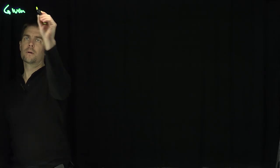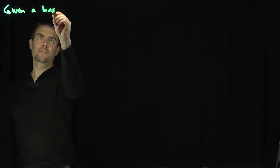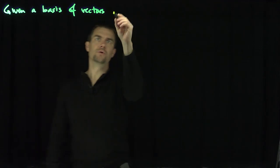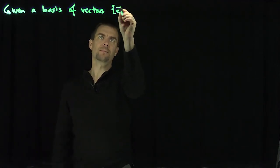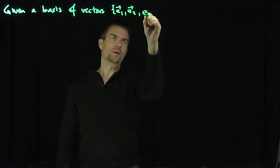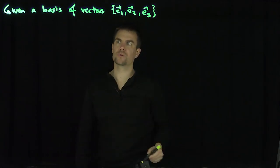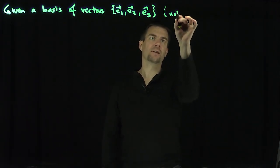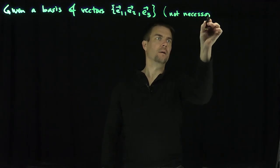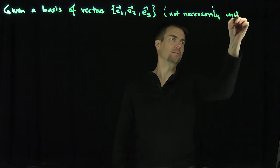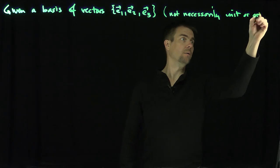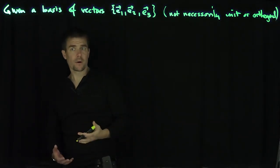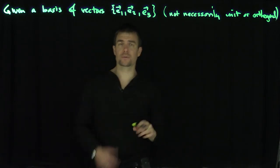Let's be given a basis of vectors: E1, E2, and E3 — this works in any number of dimensions. E1, E2, and E3 represent classical three-dimensional Euclidean space. The key here is that they're not necessarily unit vectors or orthogonal. This procedure works even in coordinates that are not orthogonal and not unit vectors.